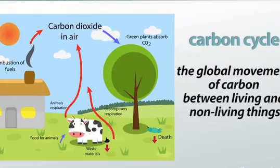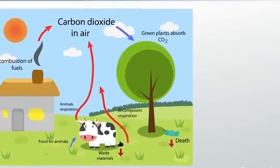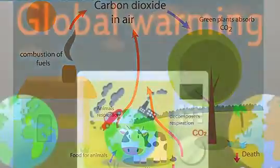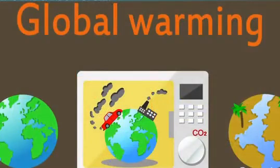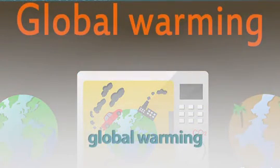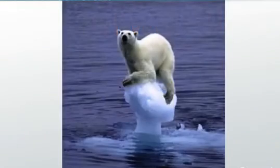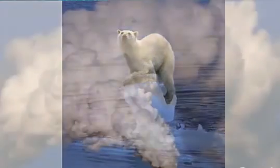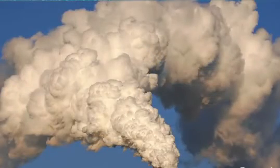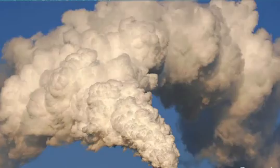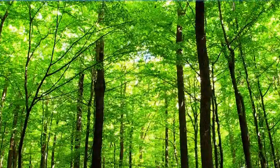Recently, increased levels of carbon dioxide are contributing to a process called global warming, which, as it sounds, is a global increase in temperature. Some of the predicted long-term effects of global warming are described above, and until we restore an equilibrium of the carbon cycle, this could be our future. Today we're going to learn the details of the carbon cycle and how water helps regulate it.